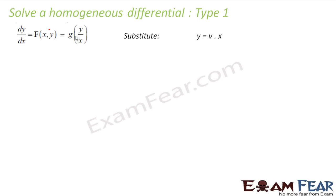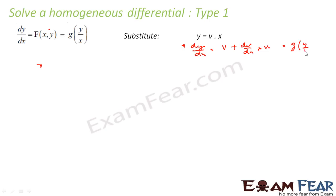To solve such an equation, we substitute y equal to vx. Note that dy/dx is equal to g(y/x). If y equals vx, then dy/dx equals v times dx/dx, which is 1, plus dv/dx times x. And dy/dx is always equal to g(y/x), and y/x equals v, so we can write g(v).